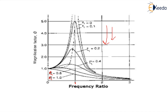The graph shows maximum magnification factor values for different damping ratios. In most cases, the maximum magnification factor is achieved when the frequency ratio is slightly less than 1.